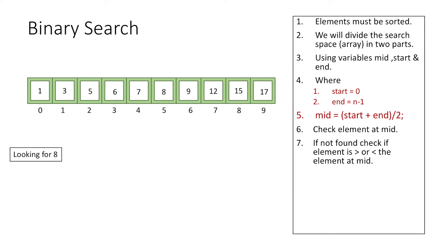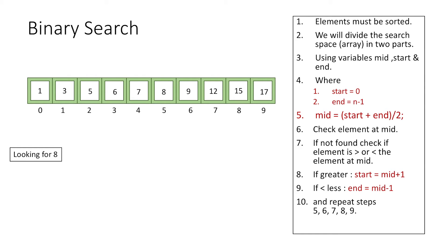If the element at mid is not what we are looking for, we check whether the target value is greater than or less than the element at the middle index. If it is greater, we store mid + 1 in start; if it is less, we store mid - 1 in end. We repeat these steps until we find the element.